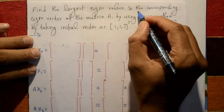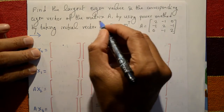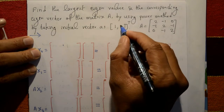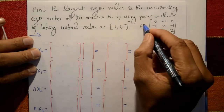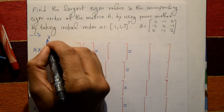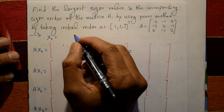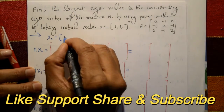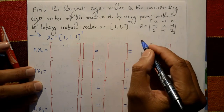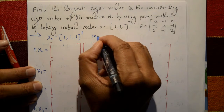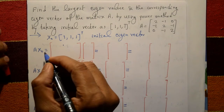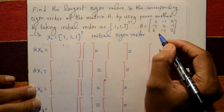Find the largest eigenvalue and the corresponding eigenvector of the matrix A by using the power method, taking initial vector x0 = [1, 1, 1]ᵀ as a column matrix. A is the given square matrix. The initial eigenvector x0 is [1, 1, 1]ᵀ. Now we will find the largest eigenvalue and corresponding eigenvector.